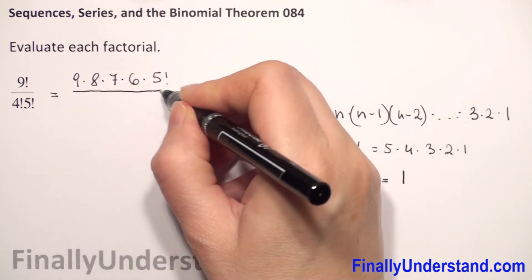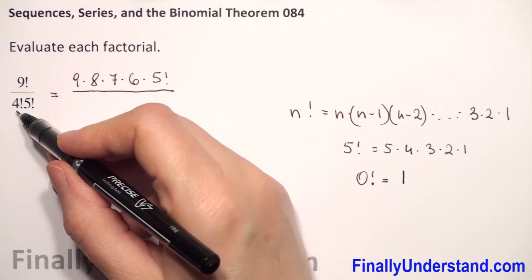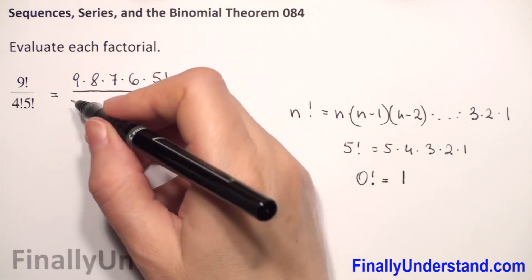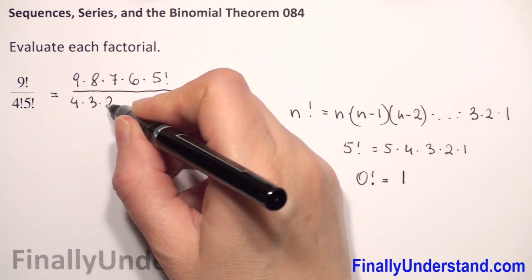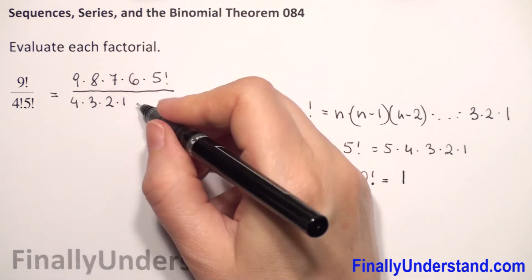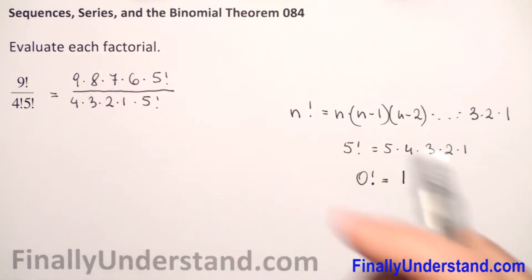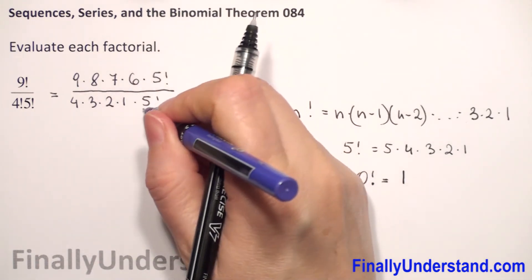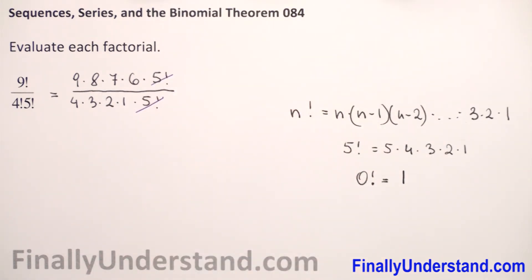Now for the denominator, I will rewrite 4 factorial as 4 times 3 times 2 times 1, and 5 factorial I will copy because we have multiplication. Now we can reduce 5 factorial.